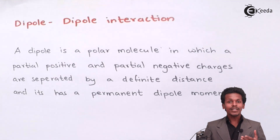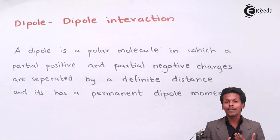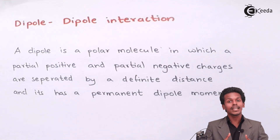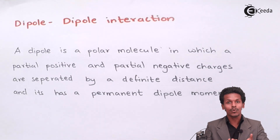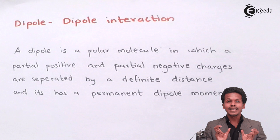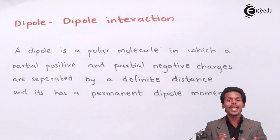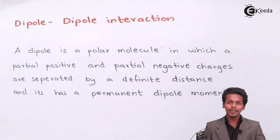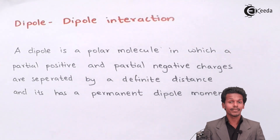When we talk about dipole-dipole interaction, we are saying that one dipole is interacting with another dipole. Therefore, the interaction between two polar dipole molecules is nothing but dipole-dipole interaction. Let us go into more detail so that we can understand it better.